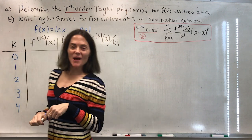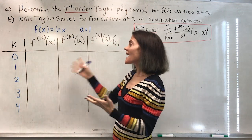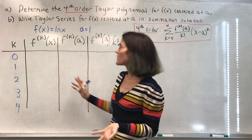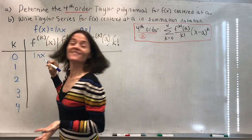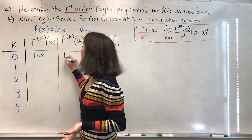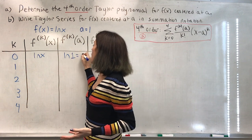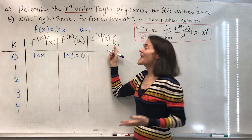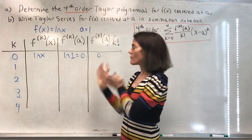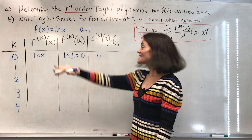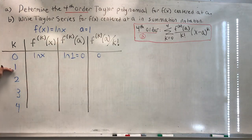k goes from 0 to 4. For part A, this is how far we need to calculate. When k is 0, the kth derivative is just the original function. Our a here is 1, so we evaluate the natural log of 1, which is 0. Then 0 factorial is 1, we divide 0 over 1 and get 0, so this first row is complete.